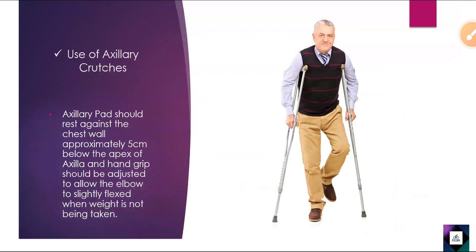How do you use axillary crutches? The axillary pad should rest against the chest wall, approximately 5 cm below the apex of the axilla. The hand grip should be adjusted to allow the elbow to be slightly flexed when weight is not being taken.